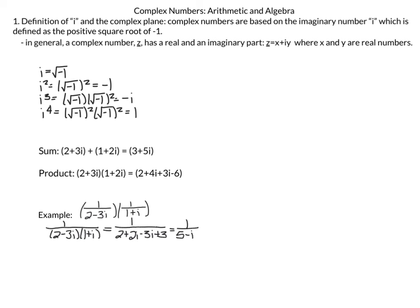If we wanted to add 2 plus 3i and 1 plus 2i — i is like a variable, so we group like terms: 2 and 1 gives us 3, and 3i plus 2i gives us 5i. Similarly, if we multiply 2 plus 3i times 1 plus 2i: 2 times 1 gives 2; 2 times 2i gives 4i; 3 times 1 gives 3i; and 3i times 2i gives negative 1 times 6, so minus 6.